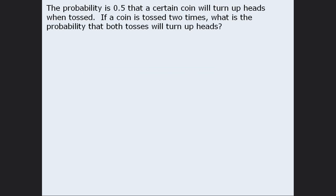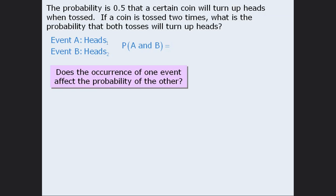In this question, we are tossing a coin two times, and we want to find the probability that both tosses will turn up heads. We define event A as getting heads on the first toss, and event B as getting heads on the second toss. We need to determine whether these events are dependent or independent: does the occurrence of one event affect the probability of the other? If we get heads on the first toss, will this affect the probability of getting heads on the second toss? The answer is no — the outcome of the first toss has no effect on the second toss, so the two events are independent, and we can apply the corresponding formula.